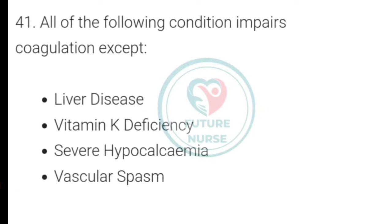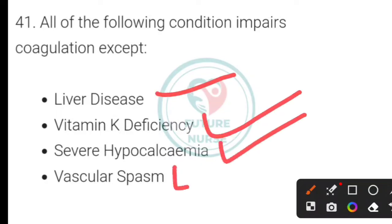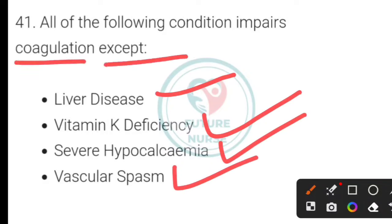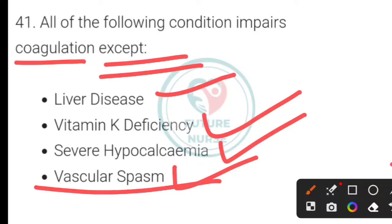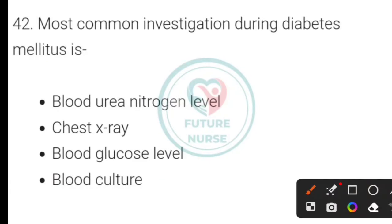All of the following conditions impair coagulation except which one? Options: liver disease, vitamin K deficiency, severe hypocalcemia, or vascular spasm. The answer is vascular spasm — it does not impair coagulation.